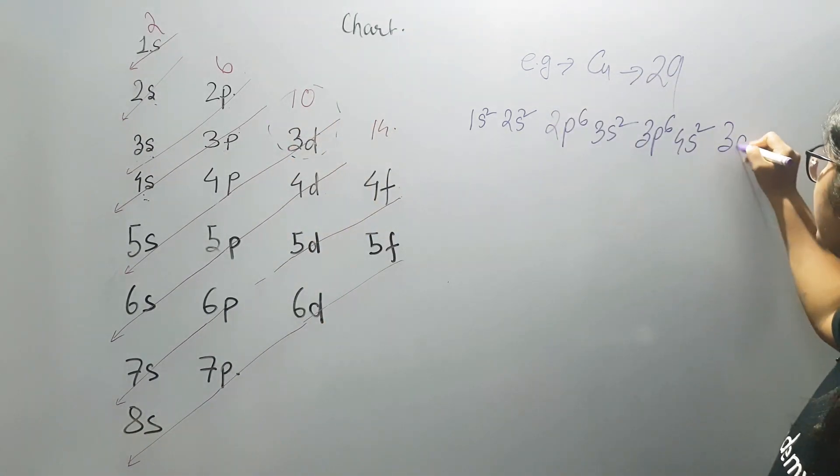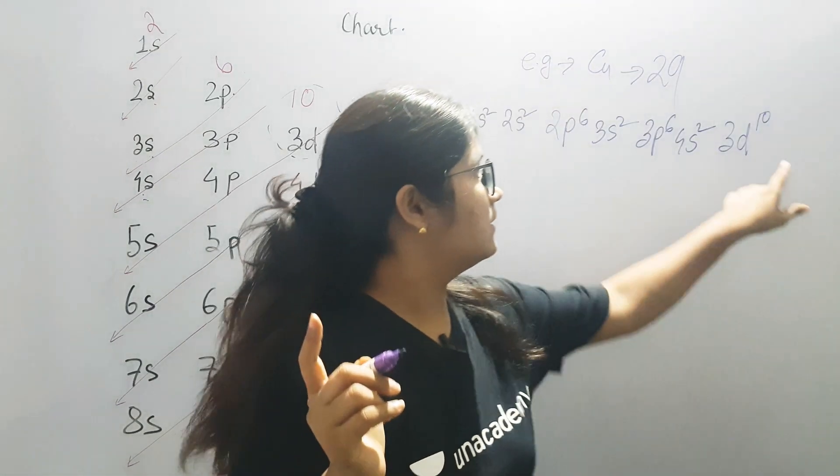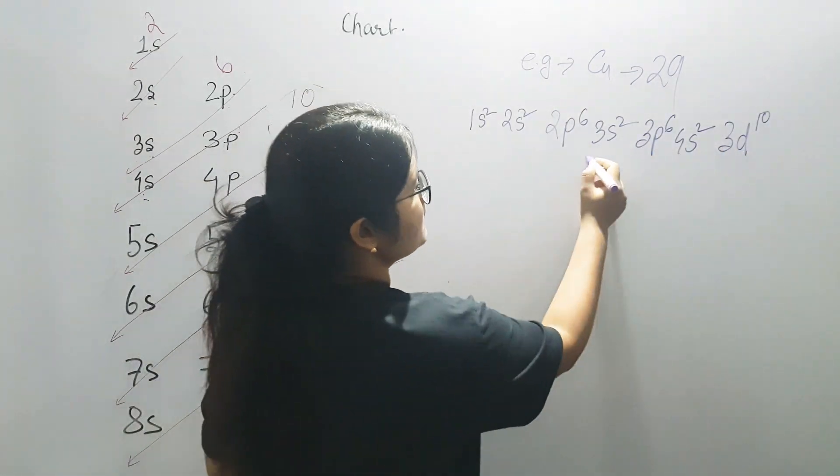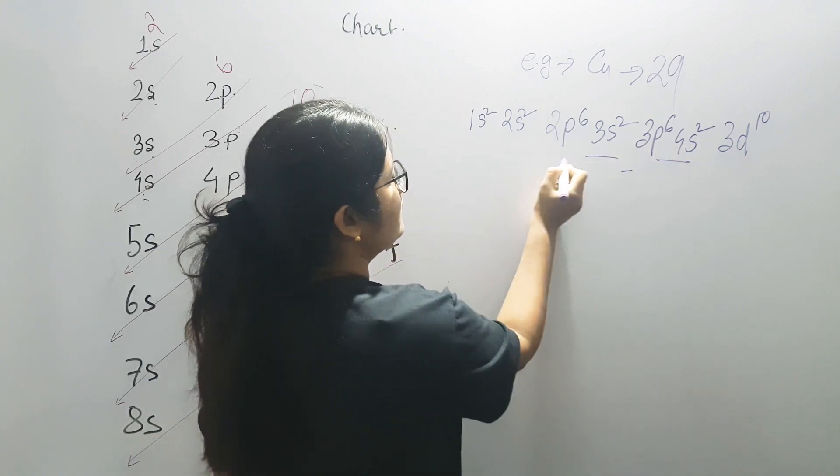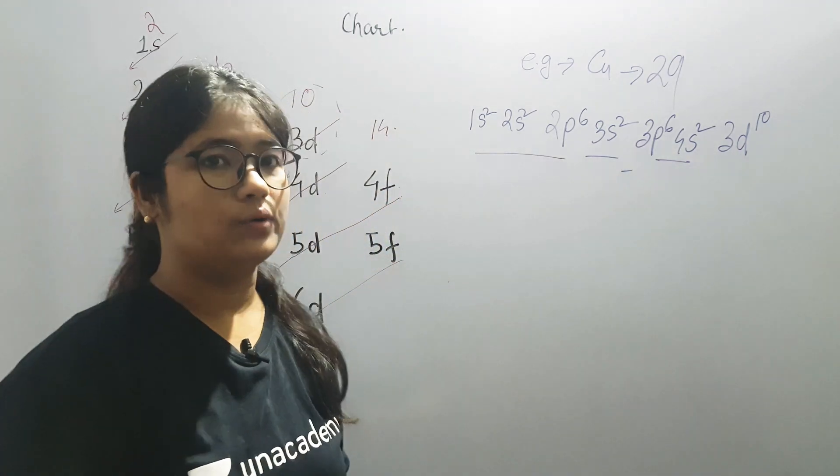If we write 3d10, then how much is it? 10 plus 6 plus 2 plus 2, 6 plus 4, 10 plus 10, equals 30. 30 will become zinc.